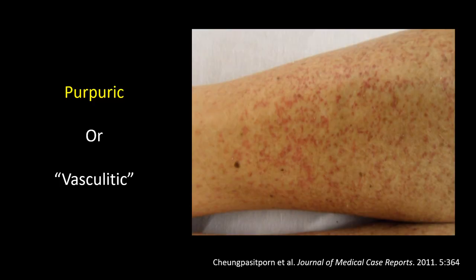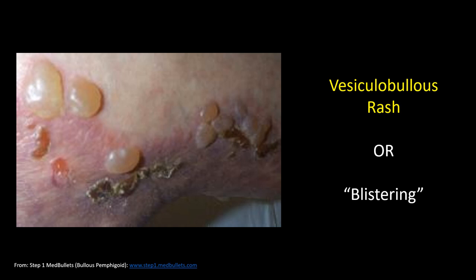A purpuric or vasculitic rash refers to a non-blanchable pinpoint rash involving the cutaneous manifestation of small vessel vasculitis. These can appear erythematous or violaceous in color. Rashes that blister are referred to as vesiculobullous — vesicles referring to small blisters and bullae referring to collections of larger vesicles that may coalesce. These types of rashes are distinct and have specific etiologies.